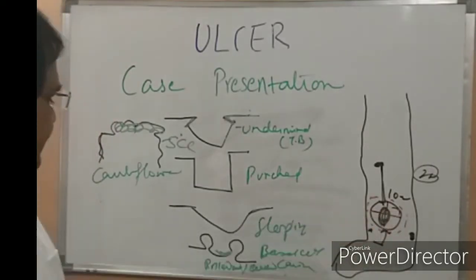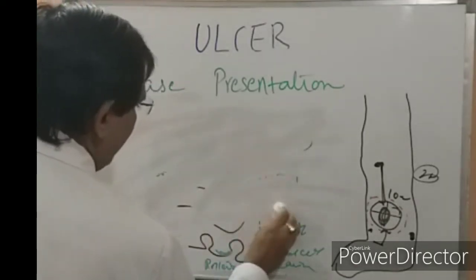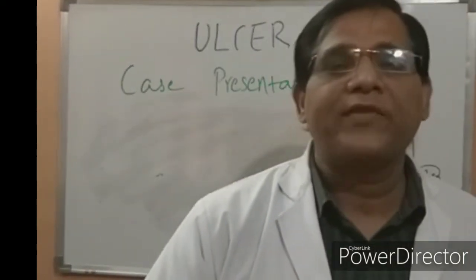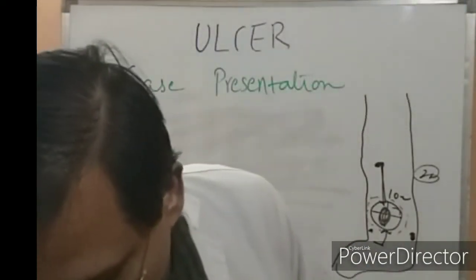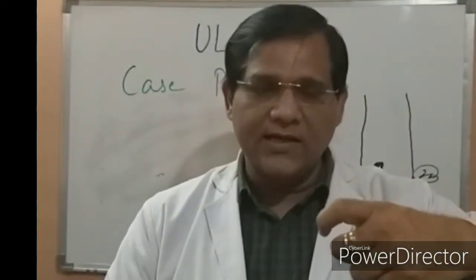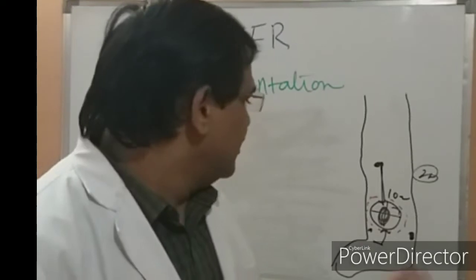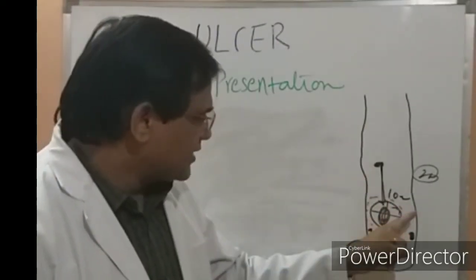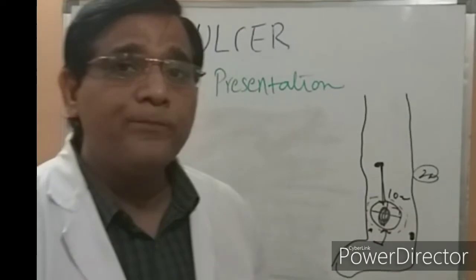The next thing to define is the floor. In our case, the floor showed slough and purulent discharge present over it. To define the base, you wear gloves, hold the ulcer, and try to move it over its attachment — it may be attached to muscle, tendon, or bone, and the depth will indicate the base. To summarize: you define site, shape, number, surrounding skin, margin, edge, floor, and base.